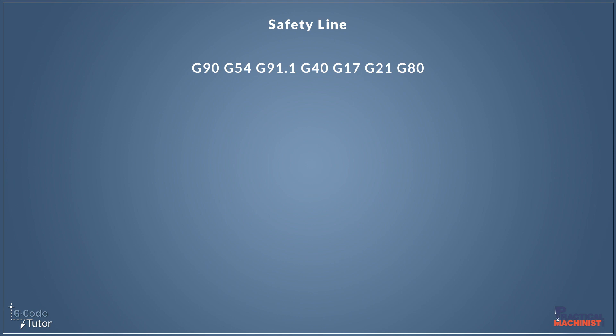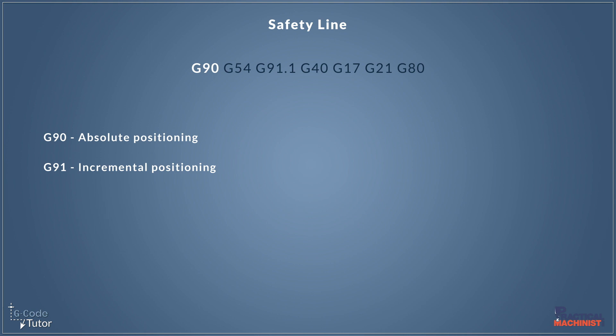Let's have a look at what I've added to this line. We may see this different on each machine — it depends on our needs, our program, and also the machine. I've started off this line with a G90, which puts the machine into the absolute positioning system. So if we had a section of program using incremental, we may wish to switch back to absolute to make sure the machine is always in the same state. If our program was entirely programmed in incremental, we would use G91 here.